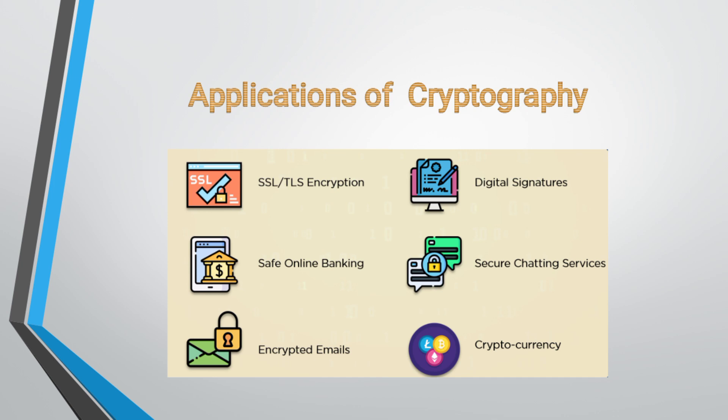Another useful area is secure chatting services. Take an example: messaging applications like WhatsApp and Telegram have now adopted an end-to-end encryption protocol, which guarantees that no one other than the sender and receiver can read the messages. This is a huge step up from SMS-based systems where security was always a toss-up. Cryptography is used in chatting for secure communications.